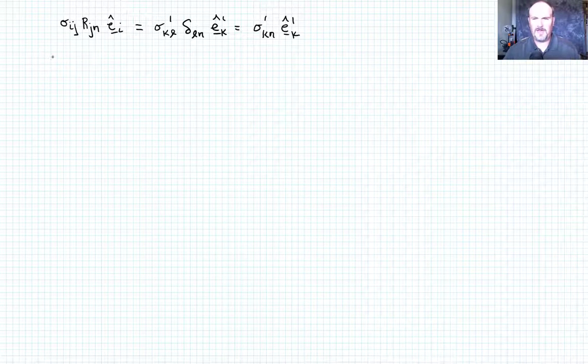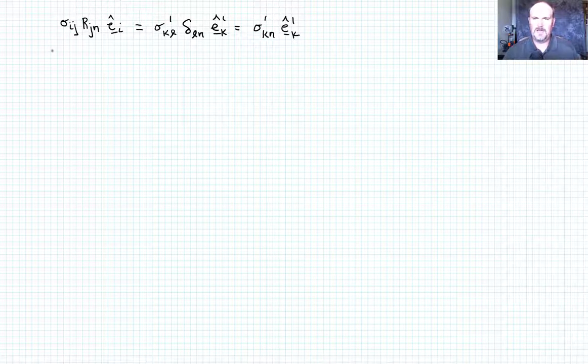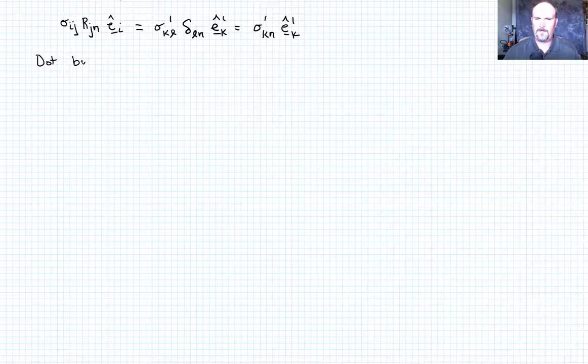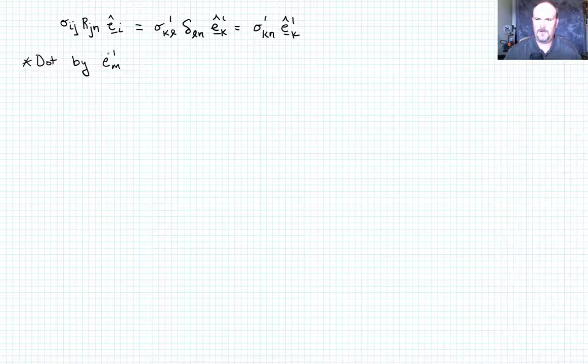Which delta_ln times sigma_kl, remember, this only has a value now when l equals n. So this can actually become n. And we can write this as sigma prime_kn times e_k prime. Okay. Now we just need to do the same thing again.